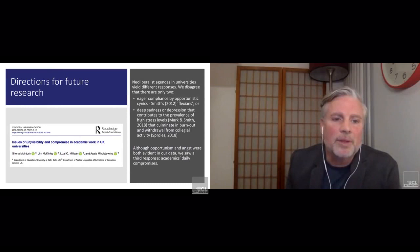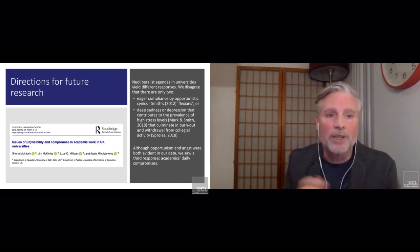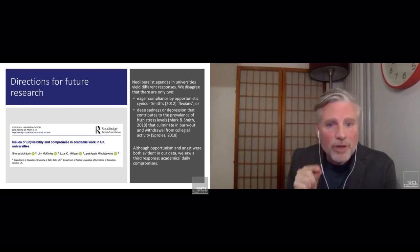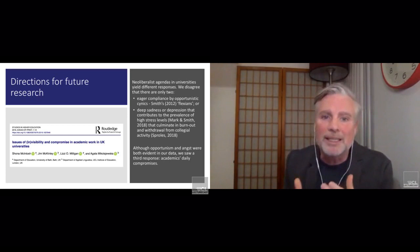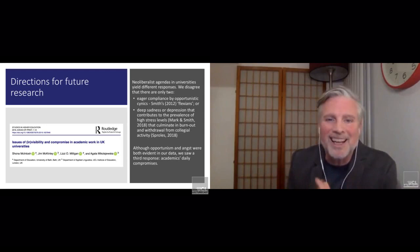Where do we go from here? Directions for future research—I just wanted to highlight some of the work, again going back to the British Academy study, where we need to think about where we are. Higher education research can be a bit pessimistic, and so what I want to try to suggest is that we try to turn that around and look at the positives. For example, we pointed out in our paper that neoliberalist agendas in universities yield different responses. We disagree that there are only two: one, that there must be eager compliance by opportunistic cynics—this was Smith's idea of Flexians—people who do whatever it takes; or a deep sadness or depression that contributes to the prevalence of high stress levels that culminate in burnout and withdrawal from collegial activities.